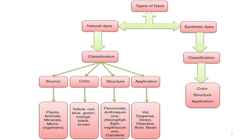Third is the classification based on structure — whether it is flavonoid dyes, anthraquinone dyes, chlorophyll, alpha naphthaquinone, or carotenoid dyes — and we did take a glimpse of the structure when we were trying to understand colorant molecules. The last classification is based on application: how is this natural dye applied on the fabric? It could be vat dye, dispersed dye, direct dye, reactive dye, acid dye, or basic dye, depending on the functional group present on the dye molecule. By now you have understood that structure plays a very important role and has to be compatible with the fabric structure.